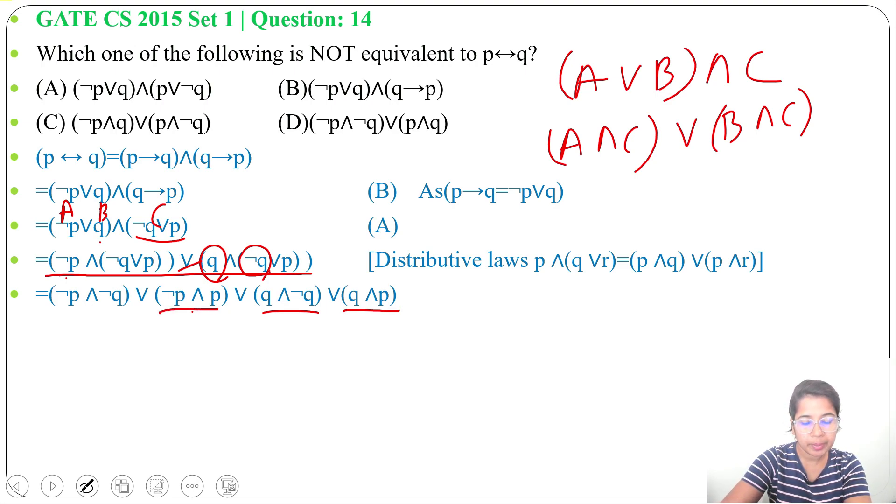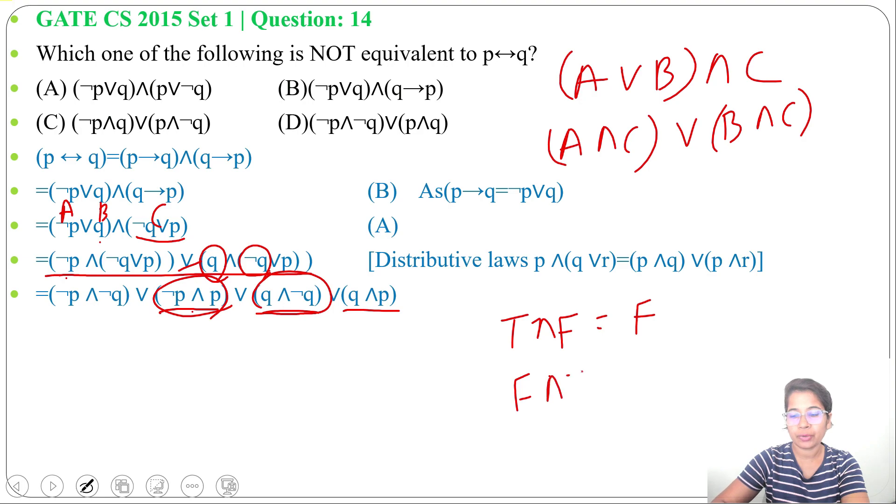Now these two, negation P and P, and Q and negation Q, these two are false. True and true will be true, rest will be false. If P is true, negation P will be false. So negation P and P, and Q and its negation, will be false.